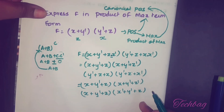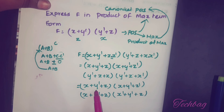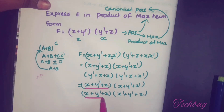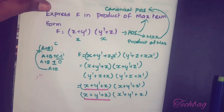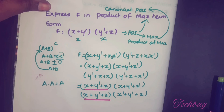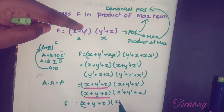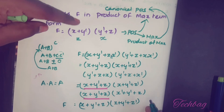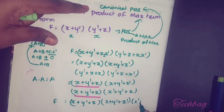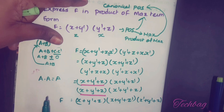Now check whether there are any identical elements. Here (x plus y' plus z) appears twice, and in AND operation a·a equals a, so the duplicate is removed. The final Product of Maxterm expression is: (x plus y' plus z) · (x plus y' plus z') · (x' plus y' plus z).